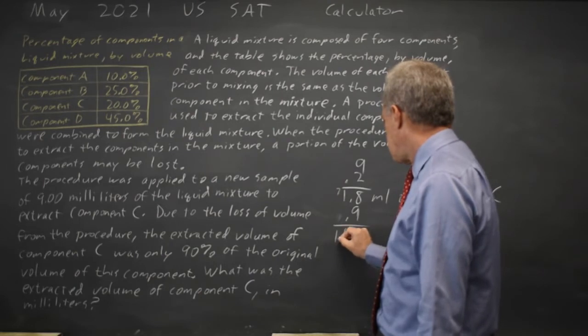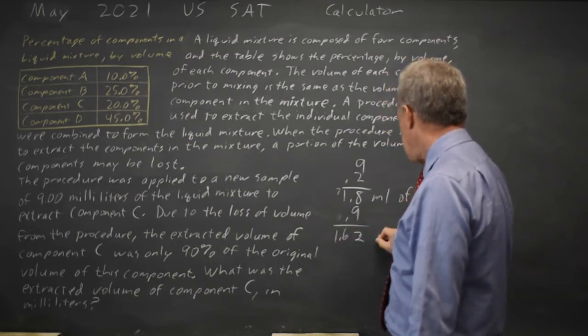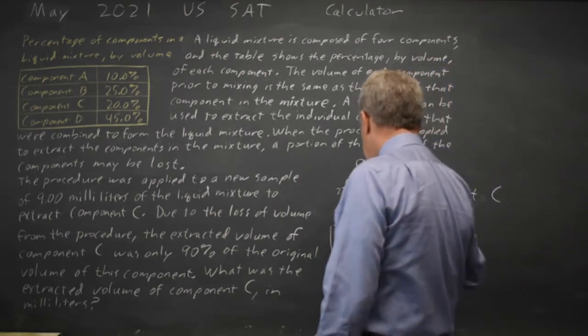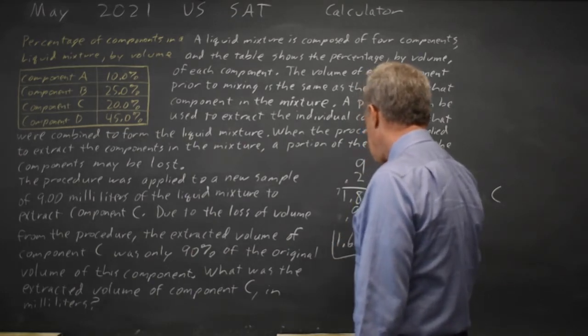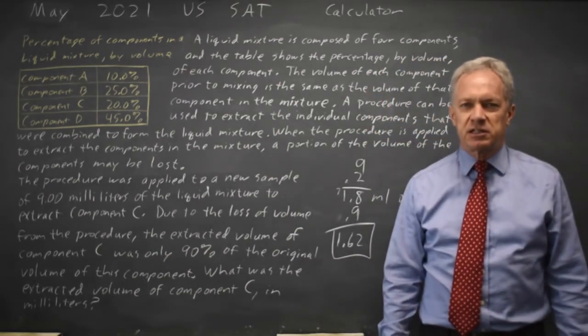That is 1.62 milliliters, so we would bubble in 1.62 is what we would grid in on our answer sheet.